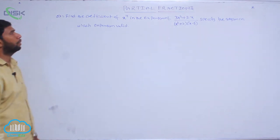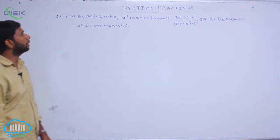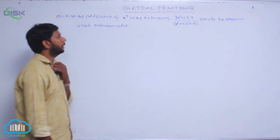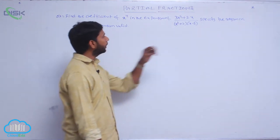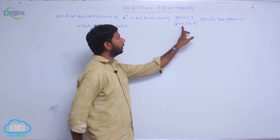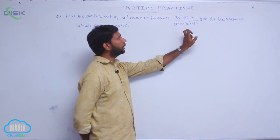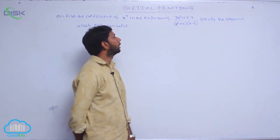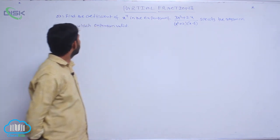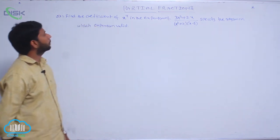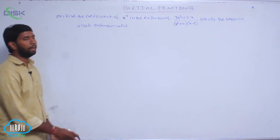Find the coefficient of x⁴ in the expansion of (3x² + 2x) / [(x² + 2)(x - 3)]. Specify the reason for which the expansion is valid.